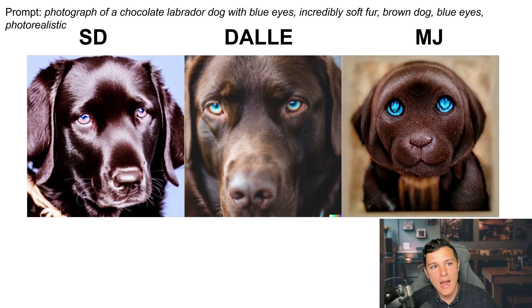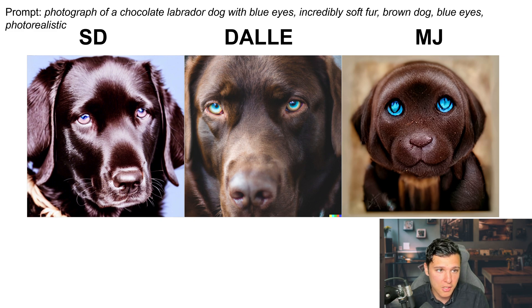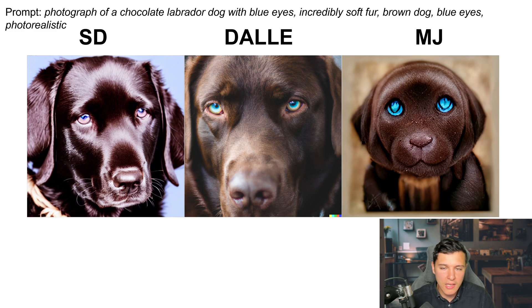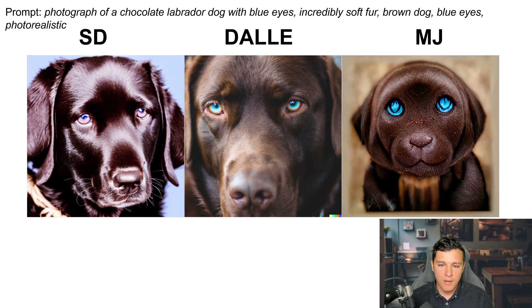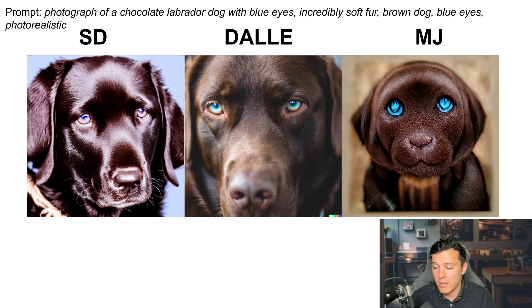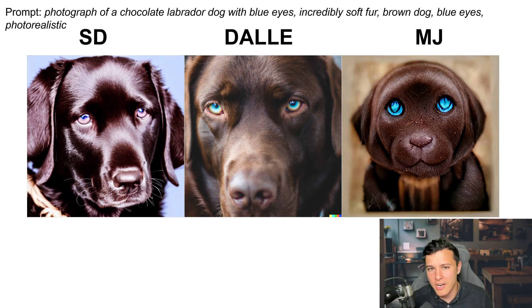The prompt here is 'photograph of a chocolate Labrador dog with blue eyes, incredibly soft fur, brown dog, blue eyes, photorealistic.' Stable Diffusion does a good job — it looks really good. DALL-E does an amazing job. You could also specify the angle of the shot, but since we didn't, a close-up is fine. Midjourney is not so good in this case because it's very artsy still — it looks pretty cool but doesn't capture the essence of the prompt. Clear winner here is DALL-E, followed by Stable Diffusion, then Midjourney.